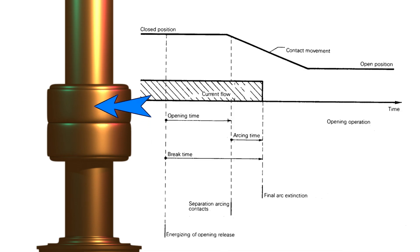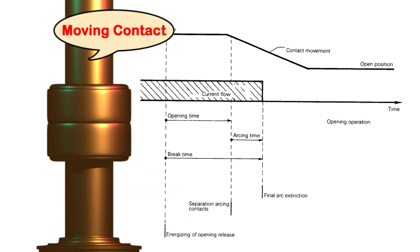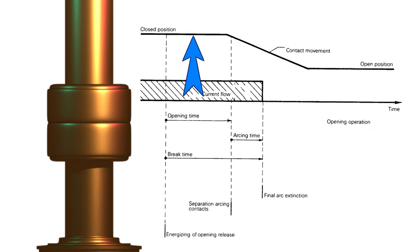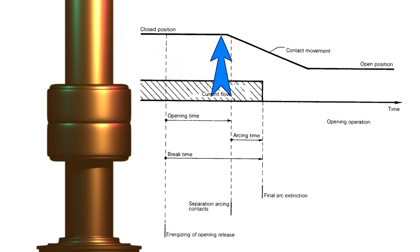This is the contact portion of a circuit breaker. That lower one is the fixed contact and that upper one is the moving contact. At this point, this is the closed position of the contact, and this closed position is indicated by this horizontal straight line, which indicates the closed position of the contact.